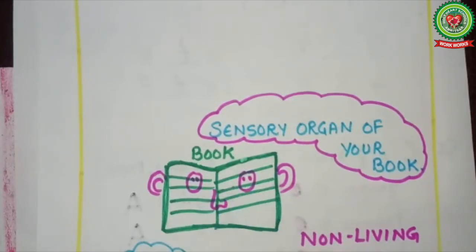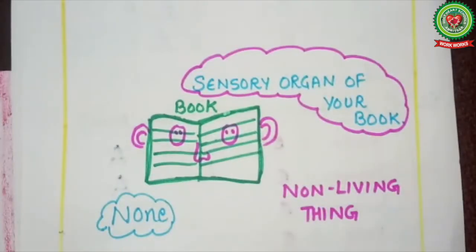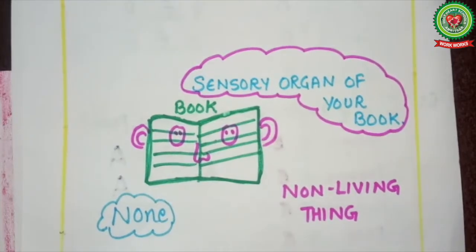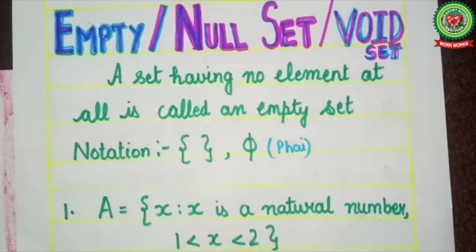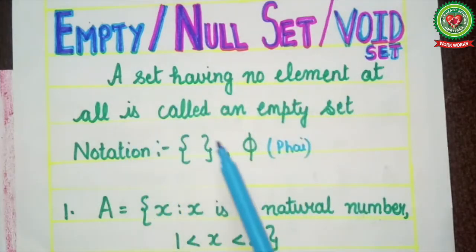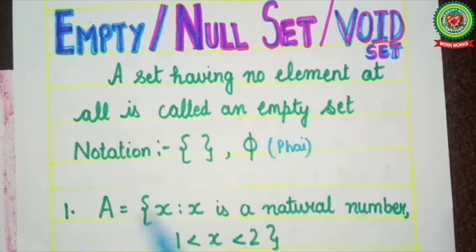Now students, try to write the sensory organs of your book. A book has no eyes, nose, or ears because it is a non-living thing, and non-living things have no sensory organs as human beings do. So what do we call such sets? We call them empty, null, or void sets.